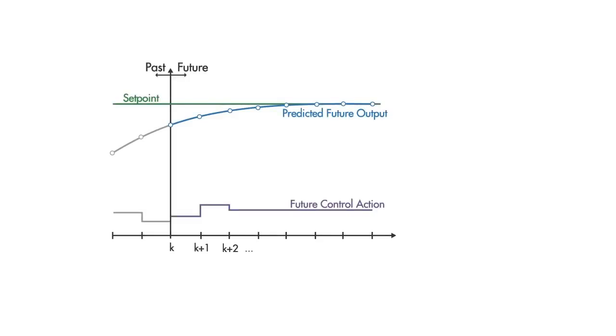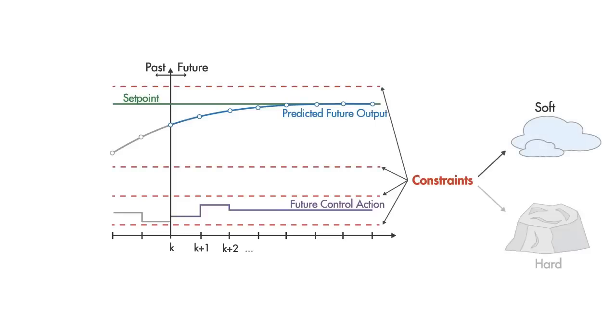MPC can incorporate constraints on the inputs, the rate of change of inputs, and the outputs. These can be either soft or hard constraints. Hard constraints cannot be violated, whereas soft constraints can be violated.